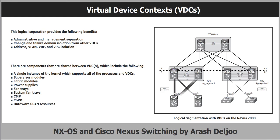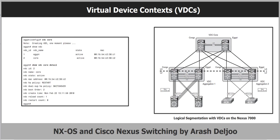This figure shows the logical segmentation with VDCs on the Nexus 7000. A common use case is horizontal consolidation to reduce the quantity of physical switches at the data center aggregation layer. In this figure there are two physical Nexus 7000 chassis, and the logical VDC layout is also shown. Next we will look at VDC configuration.